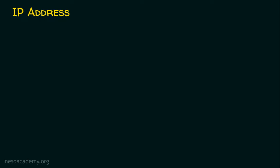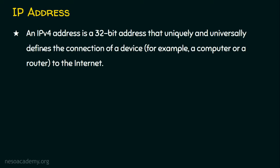A packet will definitely contain the source IP address and the destination IP address. An IPv4 address is a 32-bit address that uniquely and universally defines the connection of a device — for example, a computer or a router — to the internet. In the internet, any node is identified with the help of this IP address only. Suppose I am requesting a packet from google.com, my node is identified with the help of IP address and MAC address. And the application is identified with the help of port numbers.